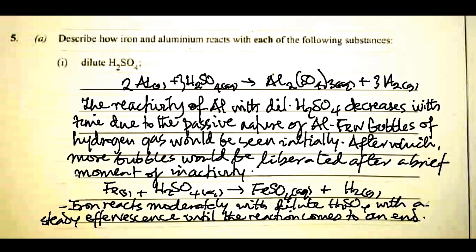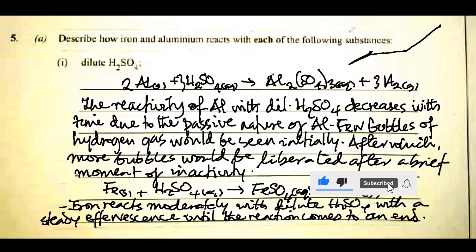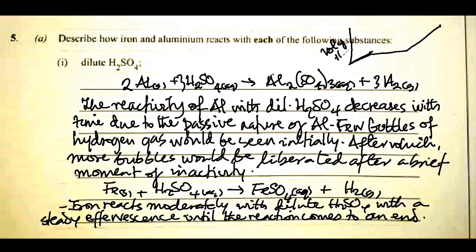Whereas for aluminium, you first see bubbles, then it stops, and then increases again. That is aluminium's behaviour with respect to time. This is the volume of hydrogen against time for aluminium.